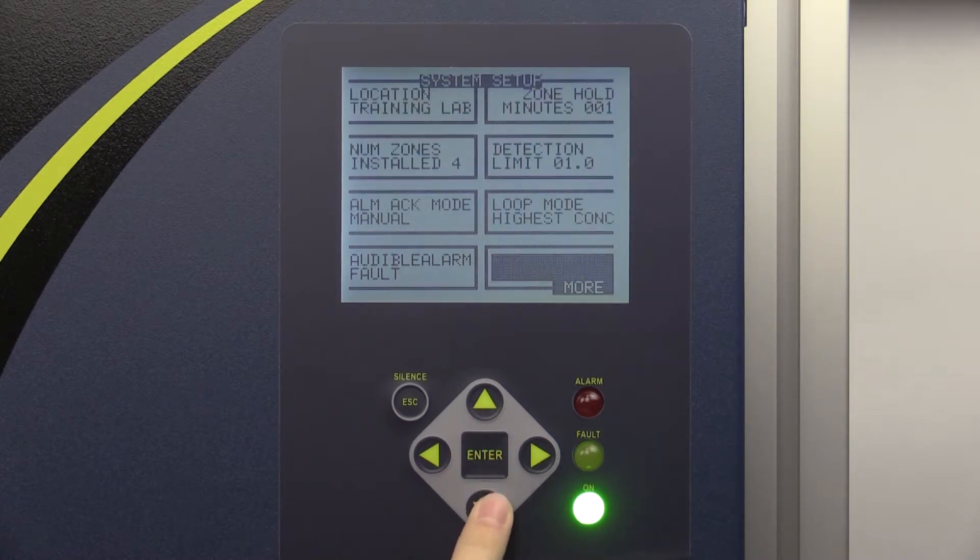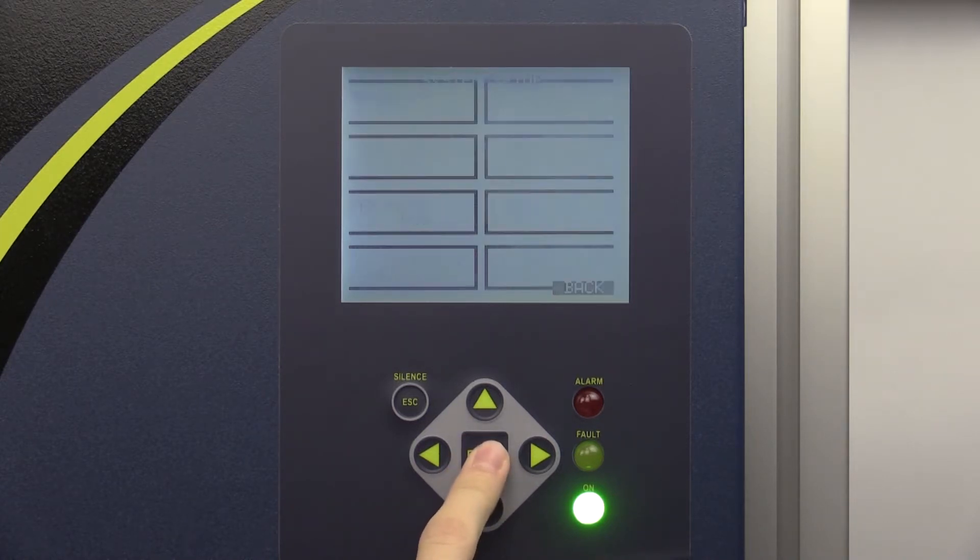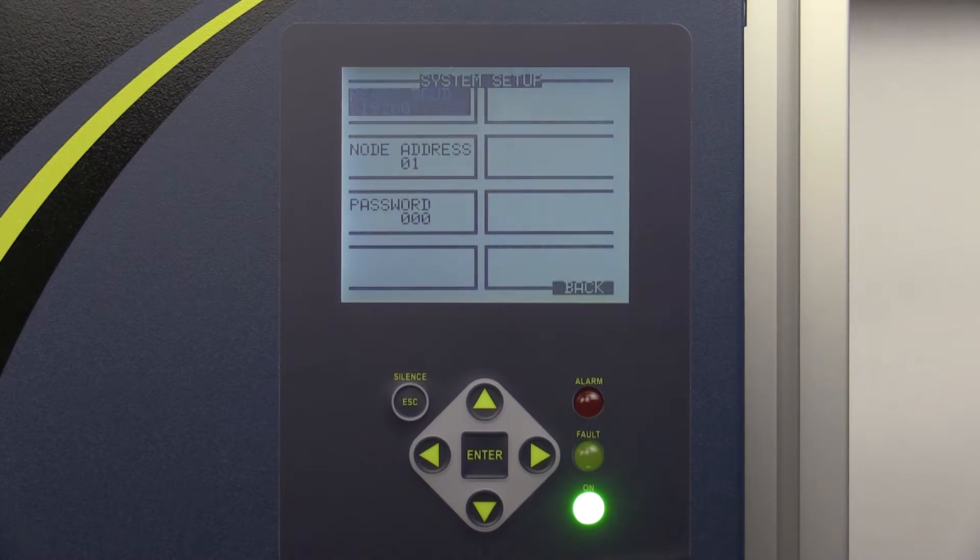Next, use the keypad to scroll to the bottom right of the System Setup screen and select the More tab. This will display System Setup screen number 2.